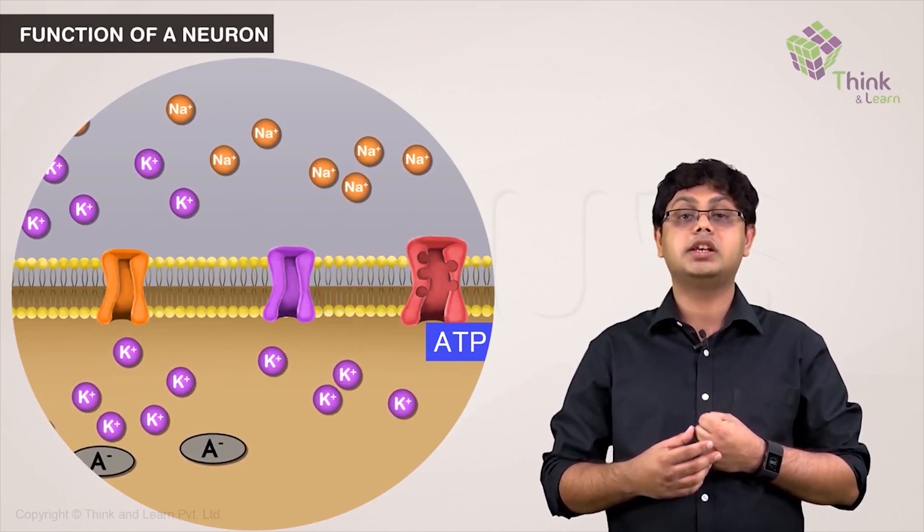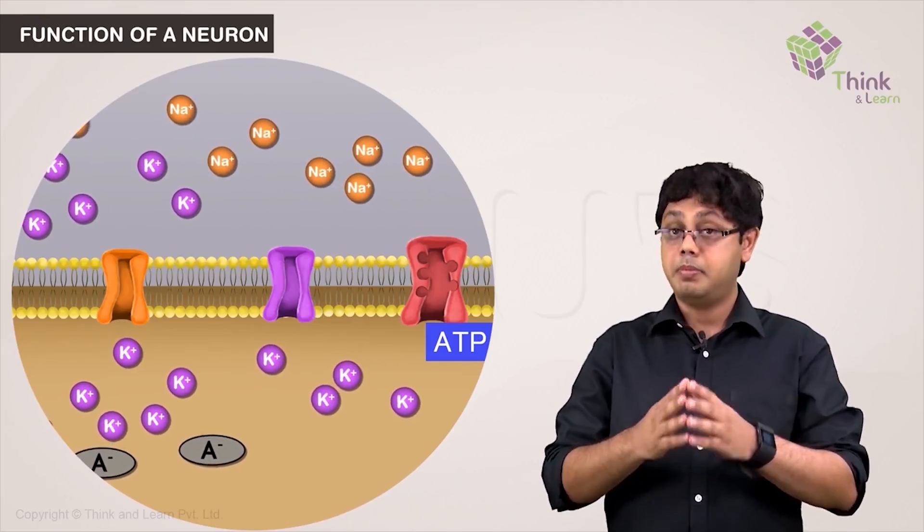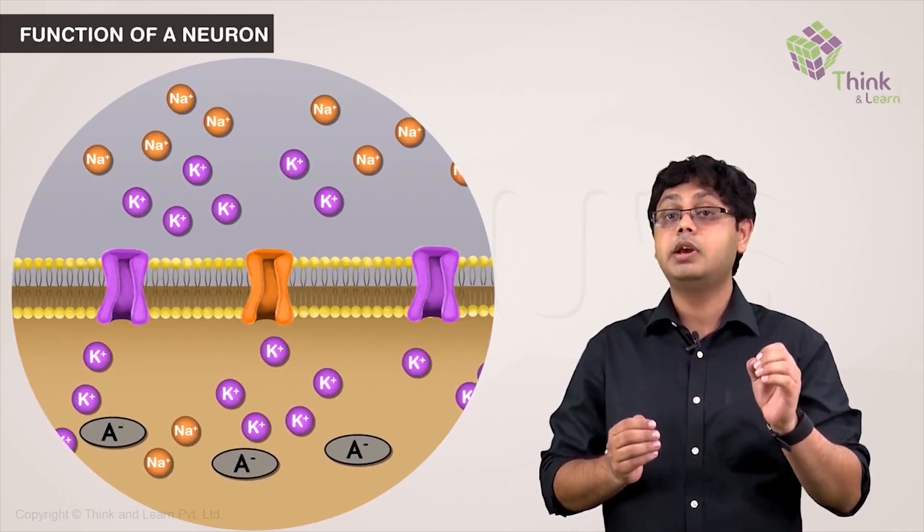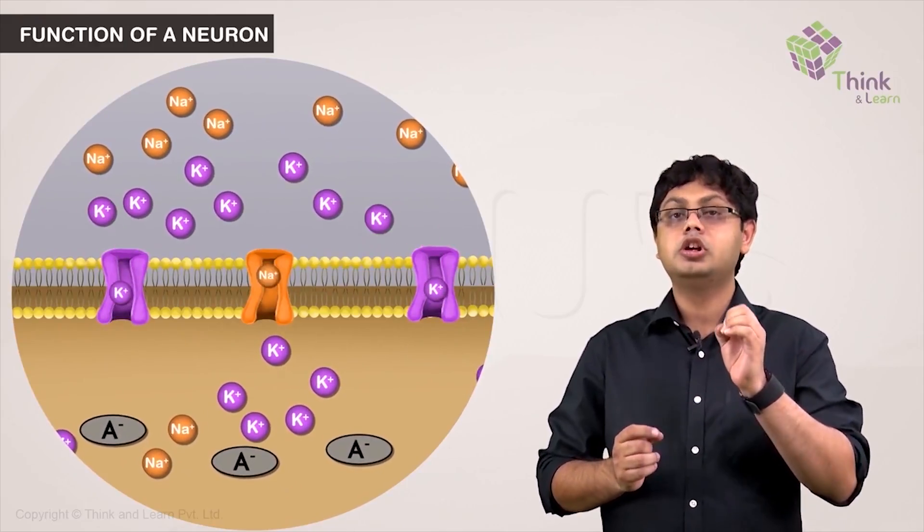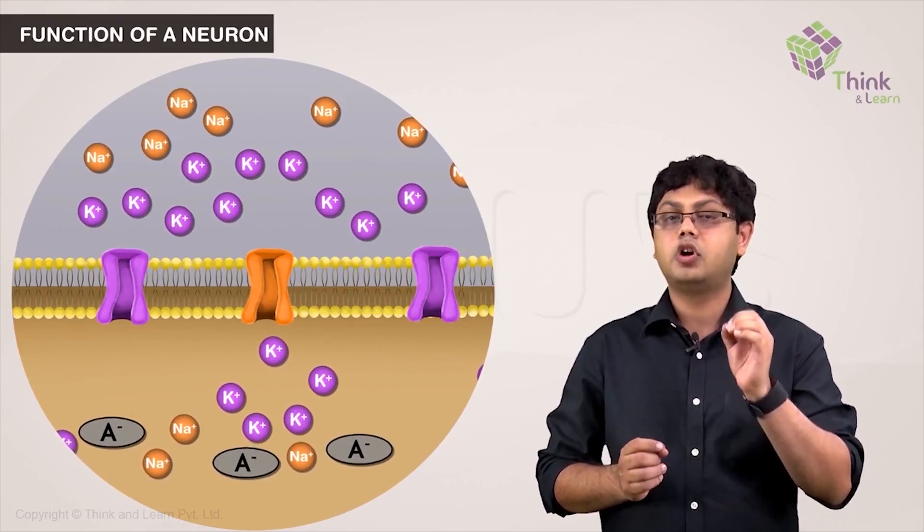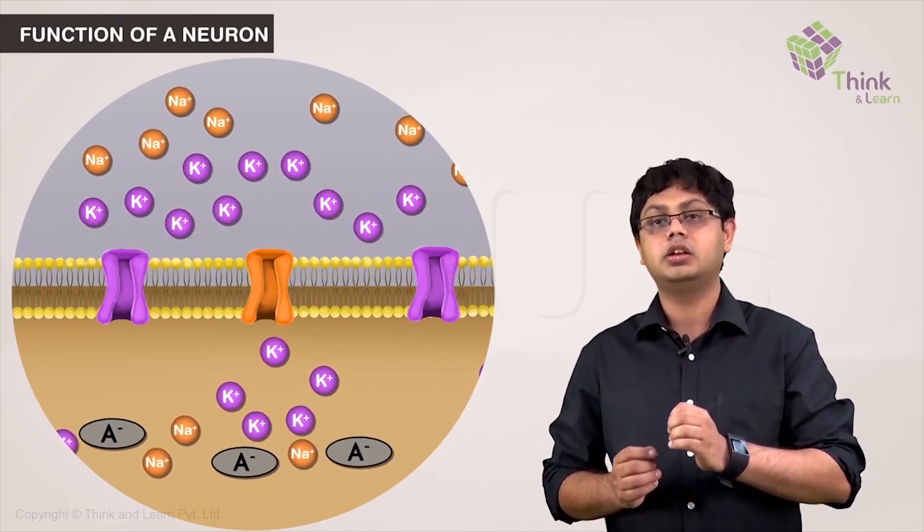The inner negative charge thus formed starts to attract the positive ions from outside the cell to bring it back. But like I said earlier, the cell membrane is more permeable to K-plus ions and therefore only K-plus ions can enter back in.